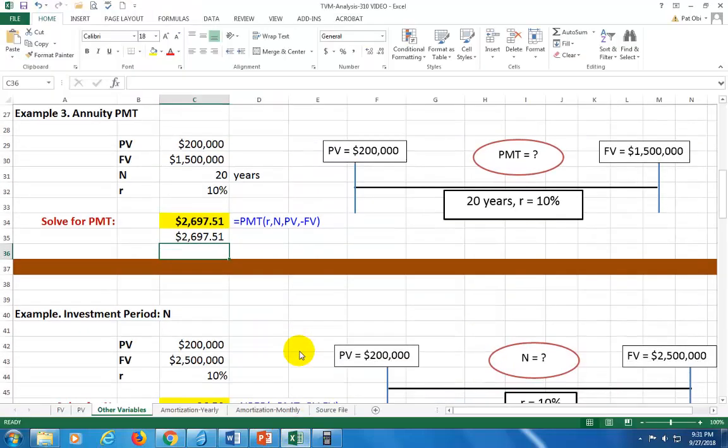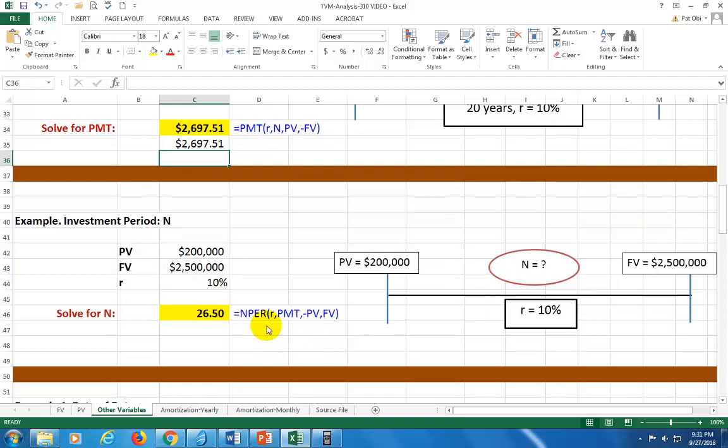And on spreadsheets, it's basically the same. You're going to use the NPER function, as I show you right here. And you're going to find the result to be 26.5 as well.